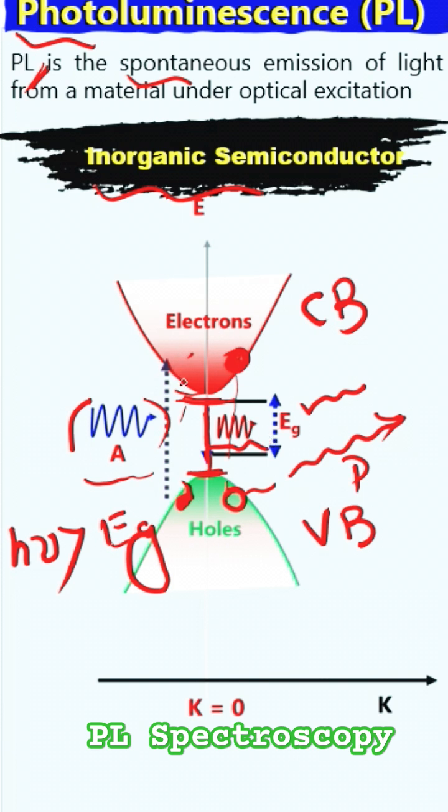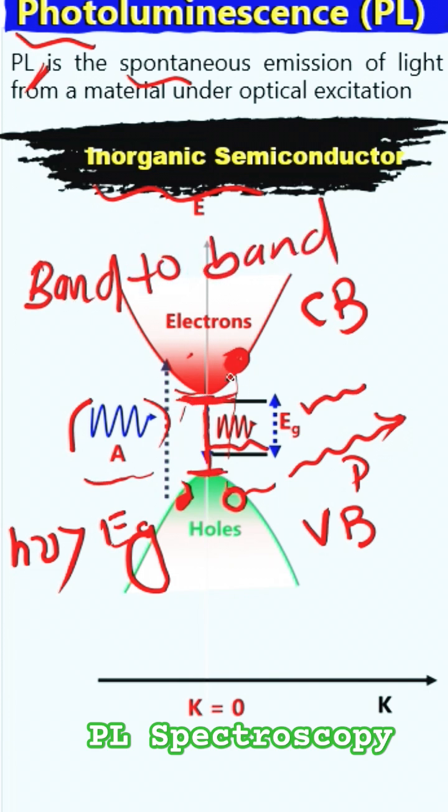There are also two types of phenomena, two types of emission occur basically here. One is called band-to-band. Band-to-band simply means that when electron directly from here just recombines with the hole in the valence band. So that is what we call band-to-band transition. And this is also we call intrinsic transitions.